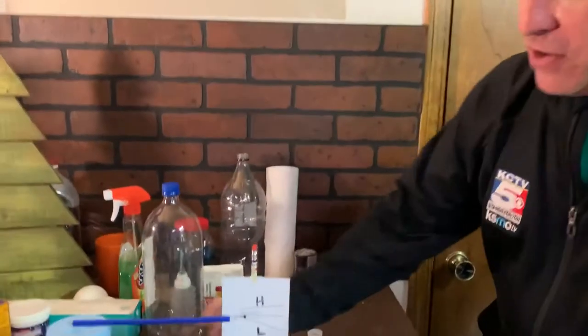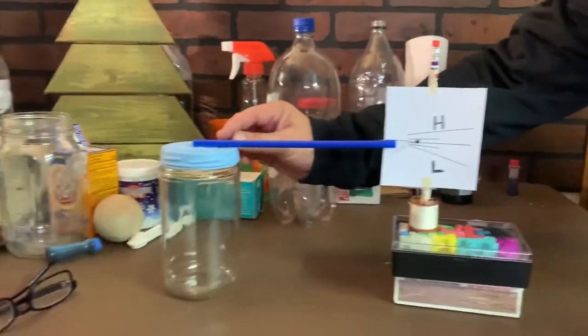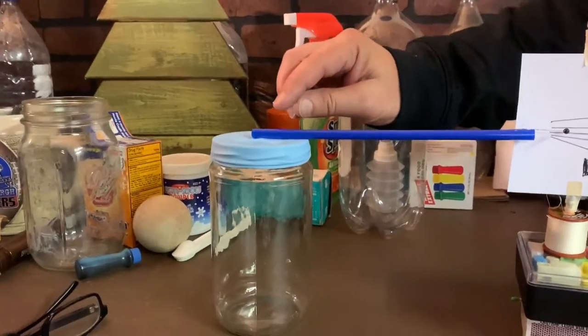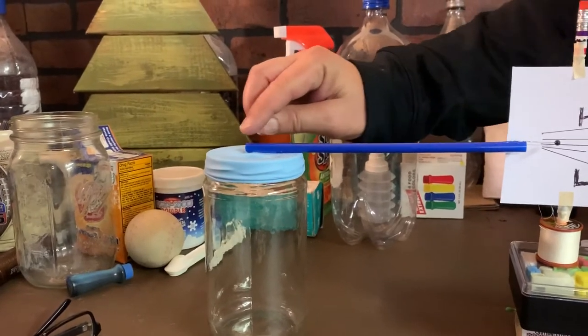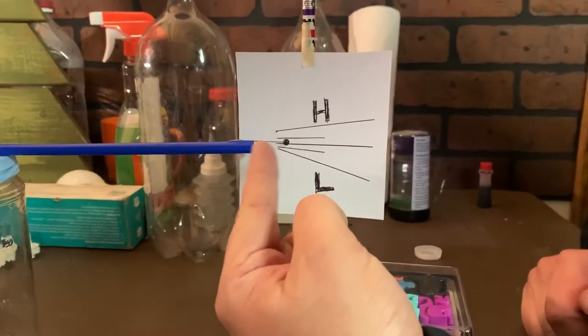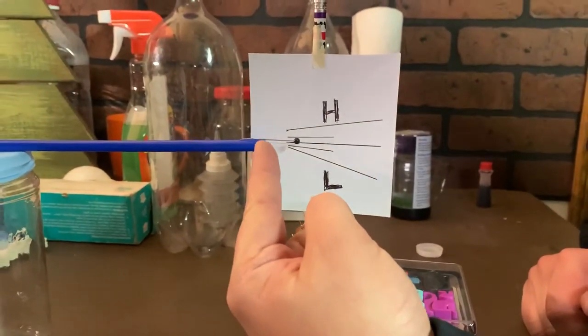This is a real easy thing to do. You need a glass jar, you cut a balloon and stretch that across the top of the glass jar, and then you'll want to glue a straw to the top of that. At the end of the straw, you're going to put a little pin. You can glue that to the end of the straw.